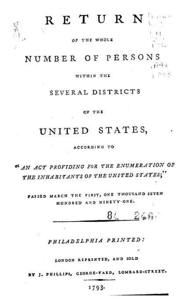The 1920 Census Questionnaire was similar to 1910, but excluded a separate schedule for American Indians. 'Hin,' 'Kor,' and 'Phil' were also added to the 'Color or Race' question, signifying Hindustani, Korean, and Filipino, respectively.